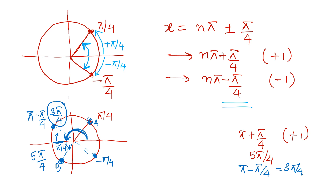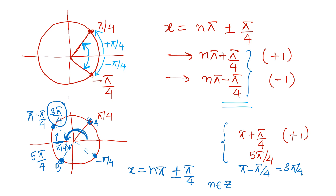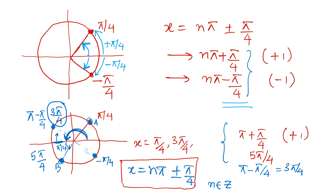So if you want to understand how to demonstrate angles on a unit circle, you can draw the unit circle and see why the solution set looks like this. The general solution is x = nπ ± π/4, where n belongs to the integers. The principal solution — values between 0 and 2π — is x = π/4, 3π/4, 5π/4, and 7π/4.